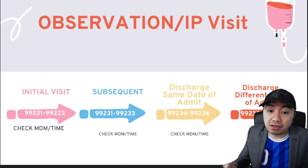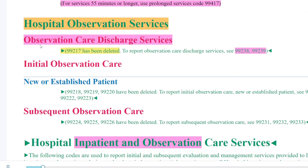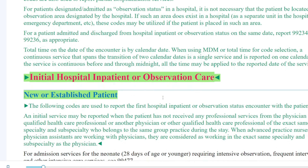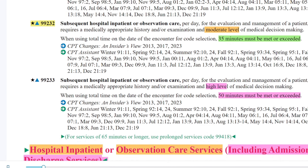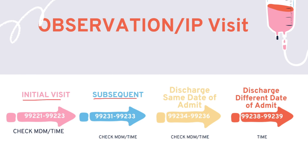For observation, check these four key components. First, check if it's the initial visit — and take note, it now includes the inpatient visit as well; they are combined into one code set. This is the 2023 version. You need to know if this is an initial visit or a follow-up, or subsequent visit — meaning the second, third, or fourth day of the patient's stay — which falls under subsequent.